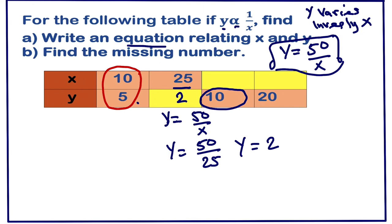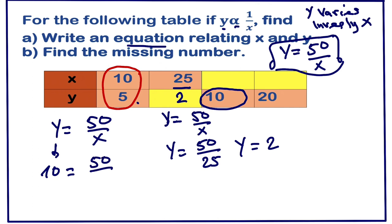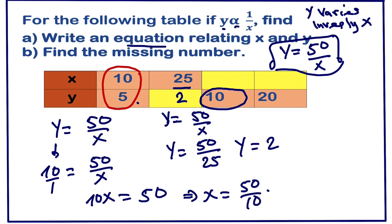Next we have been given y and we need to find x. With y = 10, we plug into the equation: 10 = 50/x. Rearranging, 10x = 50, so x = 50/10, which gives us x = 5.